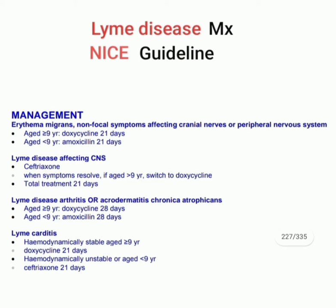First: if in Lyme disease there is erythema migrans, non-focal symptoms, or symptoms affecting cranial nerves or the peripheral nervous system, then for age nine years or more we give doxycycline for 21 days. If age is less than nine years we give amoxicillin for 21 days.